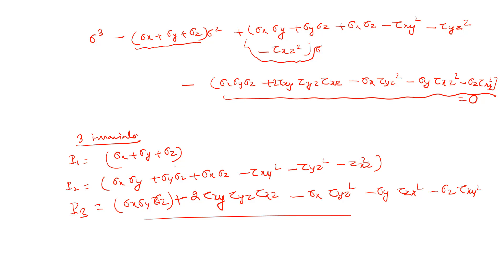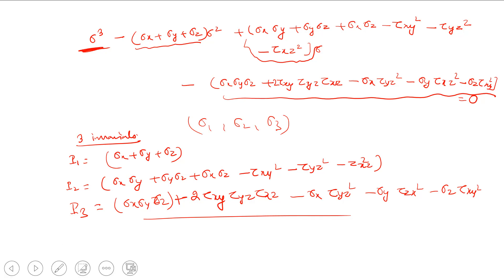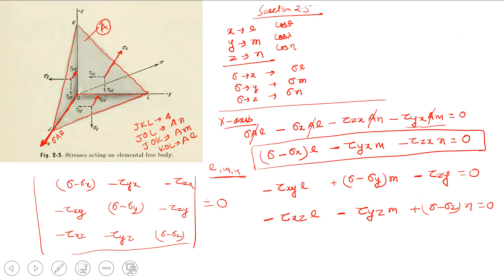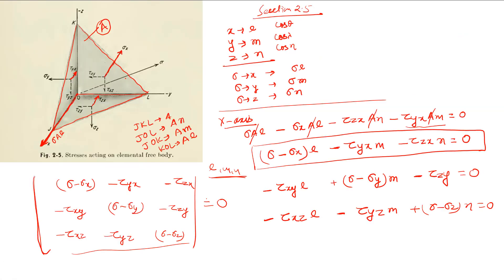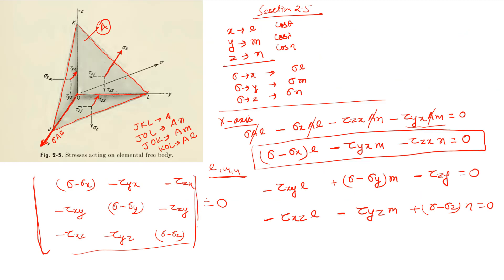Solving this cubic equation yields three values of sigma, which correspond to the three principal stresses sigma_1, sigma_2, and sigma_3. The basic requirement is to convert any given state of stress into this characteristic equation form.